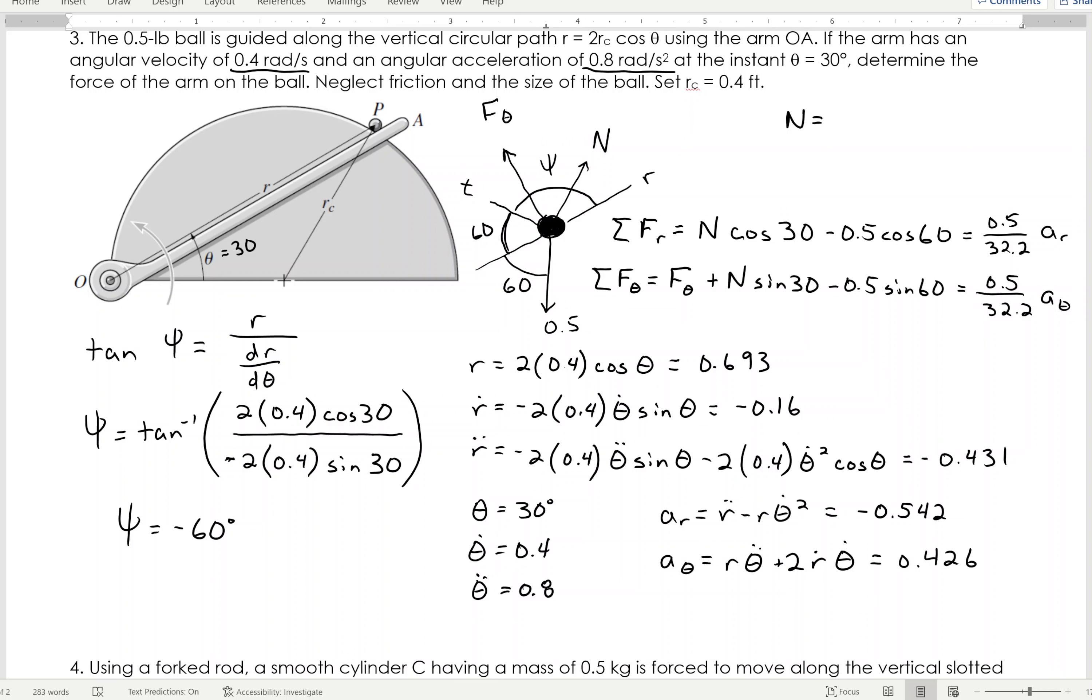And I get AR equals negative 0.542, and A theta is 0.426, taking those values, plugging in up into the top equations, I first determined that my normal force, that's the force that the path, the semicircle is placing on the ball